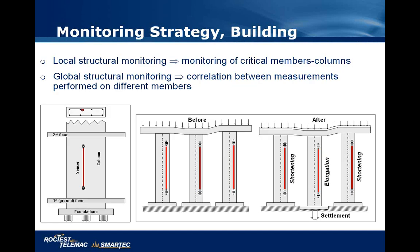There are two approaches when instrumenting a building. The first is a local approach, studying the material properties of the material used to build the structure. The second is a global approach, correlating results between different members — for example different columns — to obtain information about the global behavior of the entire structure.